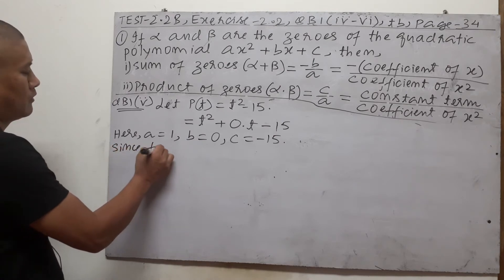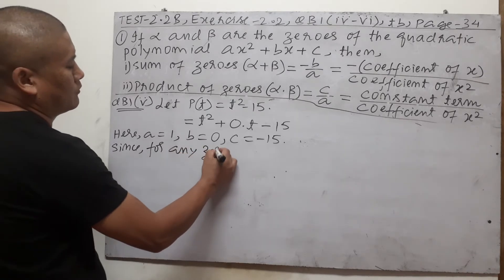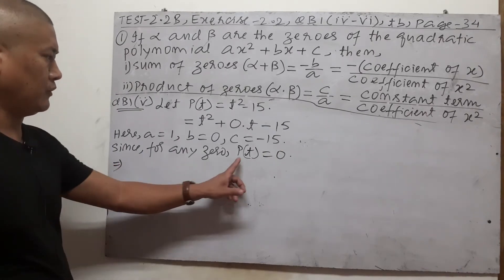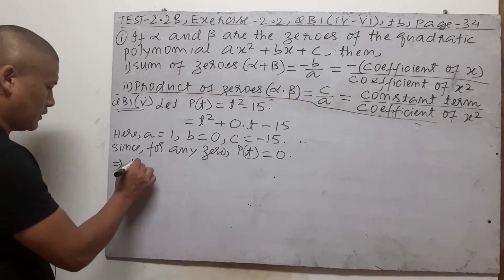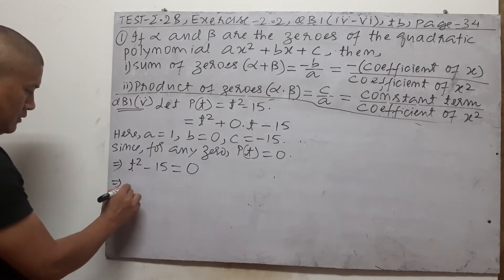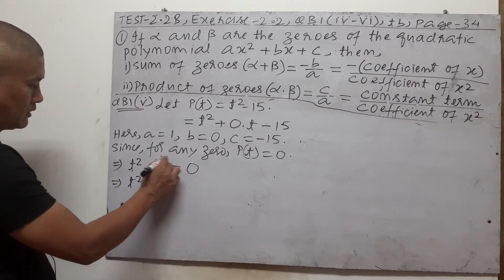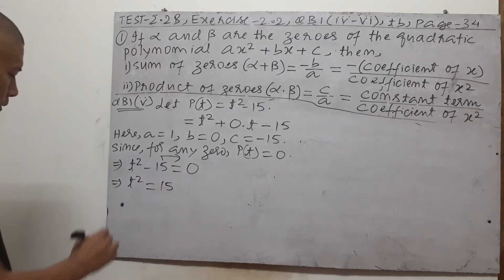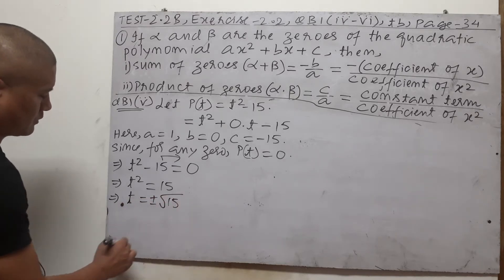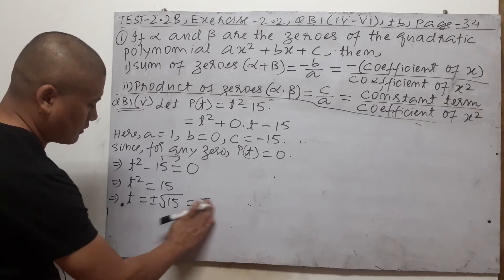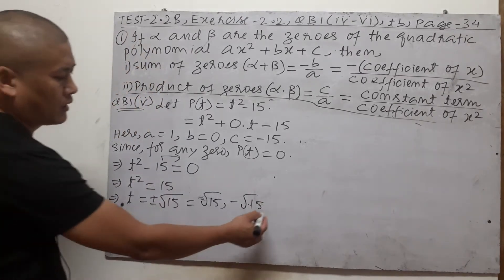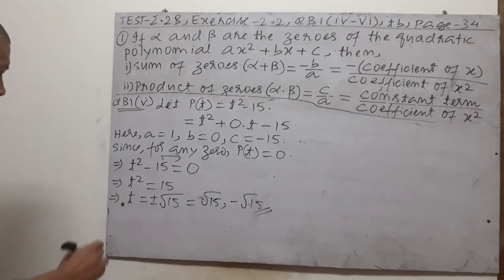For any zero, p of t = 0, so t² − 15 = 0. Shift −15 to the right side: t² = 15. Removing the square gives t = ±√15. So the two zero values are t = +√15 and t = −√15.